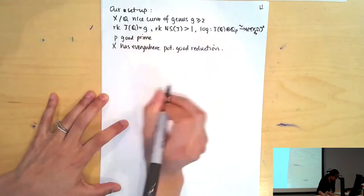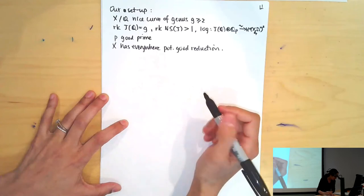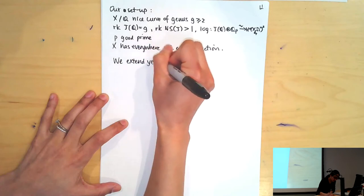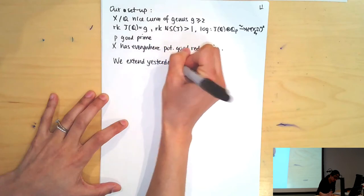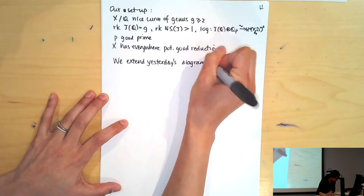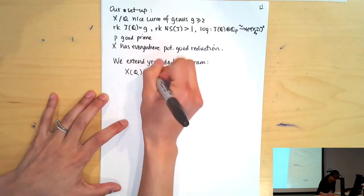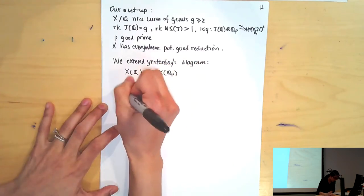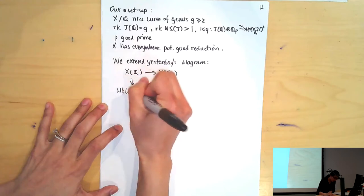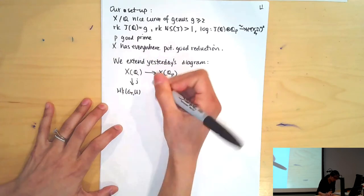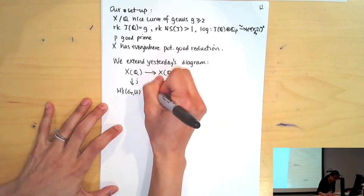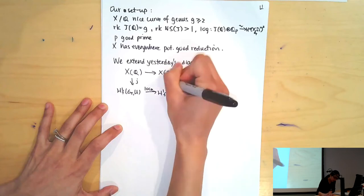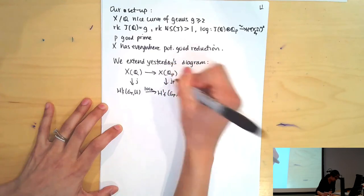The first thing we'd like to do is extend a diagram that we had yesterday. We had our rational points mapping into our Q_p points on the curve, and we also saw this in Kim's lecture - a unipotent Kummer map. Then we can localize.